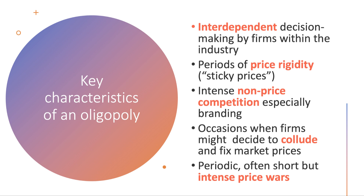There will be occasions when firms decide it's in their interest to collude — to form a cartel, either informally or explicitly, to fix prices and market share. In most cases collusion is illegal and is a form of anti-competitive behaviour, though examples do exist in oligopolies. We also see in oligopolies periodic, often fairly short-lived but intense, price wars between competing firms.